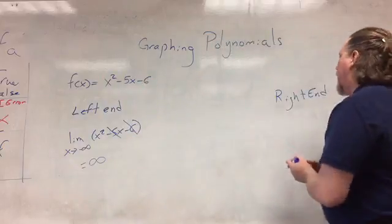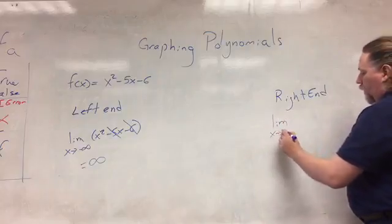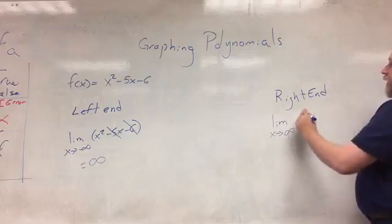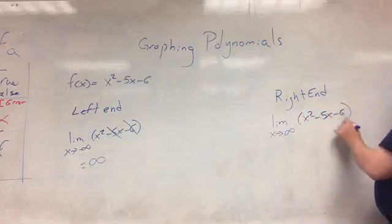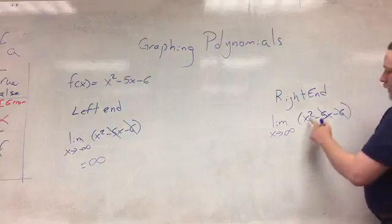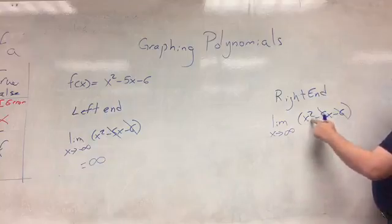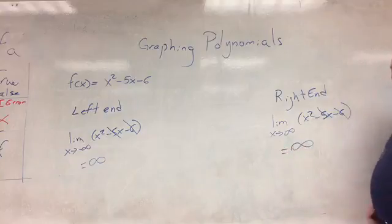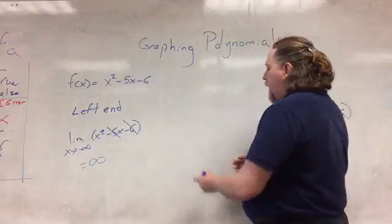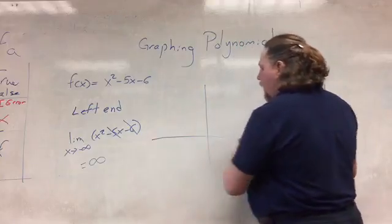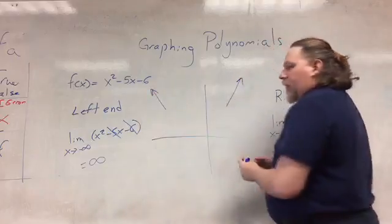Now looking at the right end behavior. I take the limit as x goes toward positive infinity of x squared minus 5x minus 6. Again, I can ignore those other terms, so I just need x squared as x goes toward infinity. A positive squared gives me infinity. So that's telling me as I go to the right, this graph goes upward. I now know that on the right it's heading upward and on the left it's heading upward.